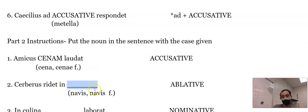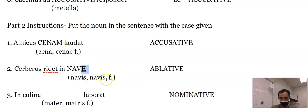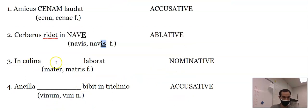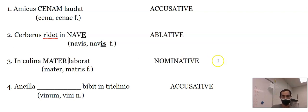Cerberus ridet in navis. So we're going to make navis ablative. That's going to be 'nave' with an E because it's third declension. That's how I know. It's third. It's got the 'is.' In the kitchen, 'mater laborat.' This one's going to stay the same. It's nominative. Nominative is always that first part in the noun listing. So 'mater.' That one, you don't even need to change. It's really convenient.